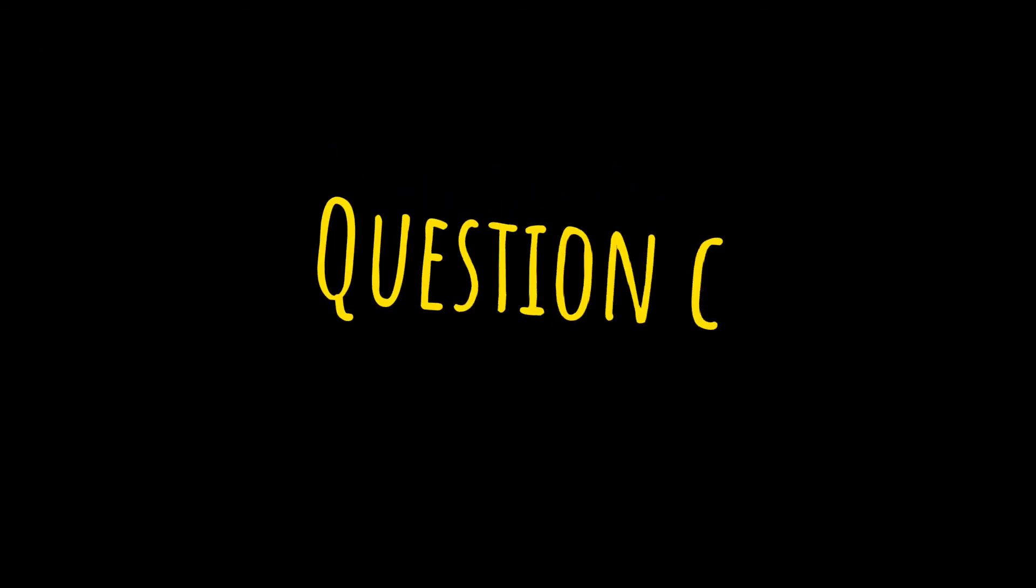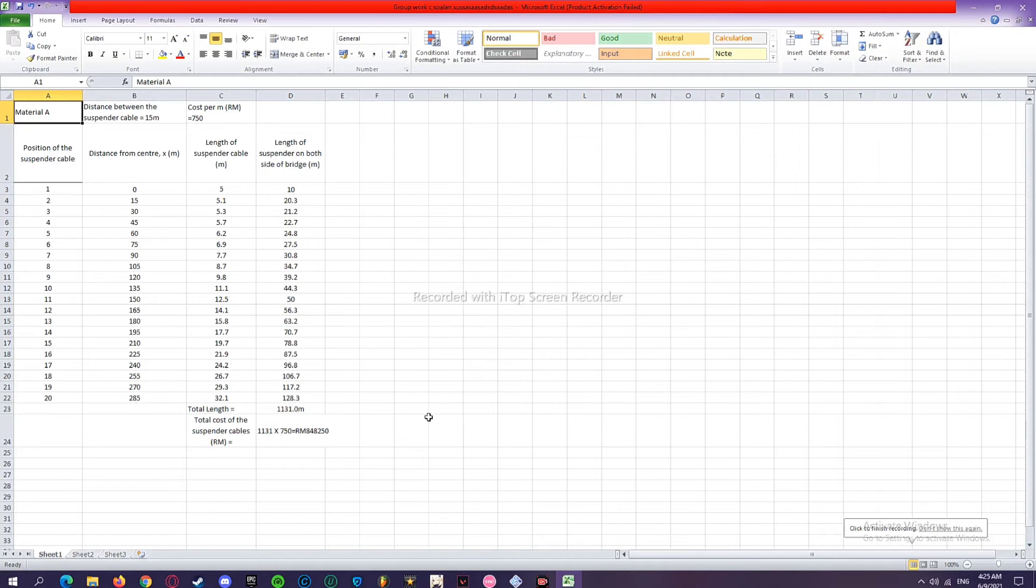Question C: Determine the type of material that should be used to make the suspender cable such that the total cost of the cable is minimum. Material A: If the distance between the suspender cables is 15 meters, the first position of suspender cable, its distance from center x is 0. This represents that it is in the middle cable. Its length of suspender cable is 5.0 meters.